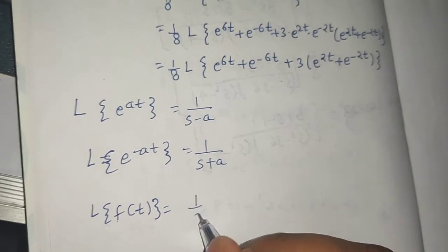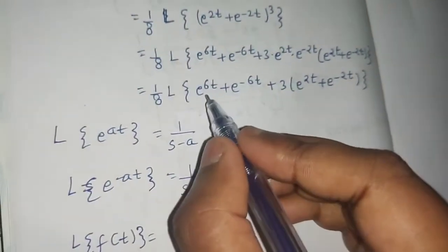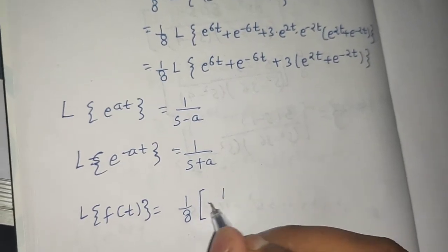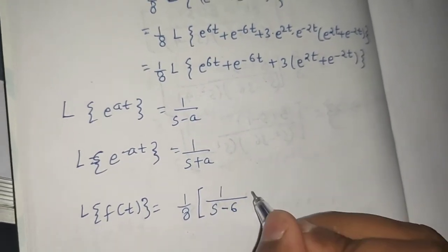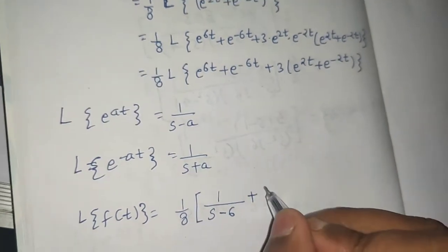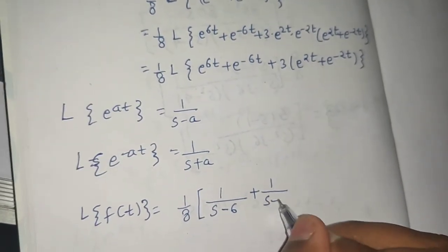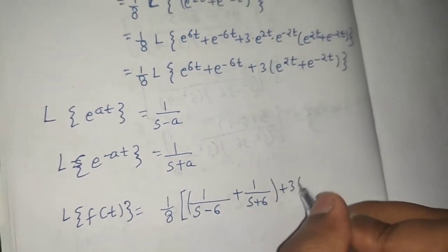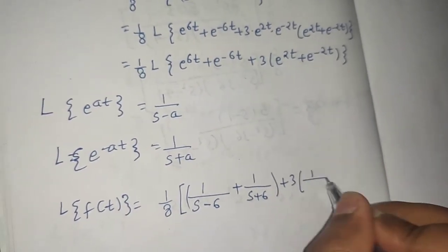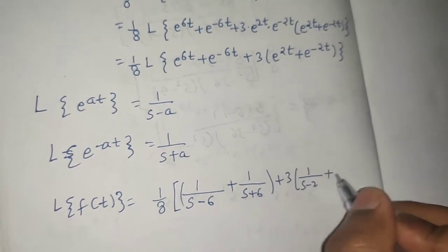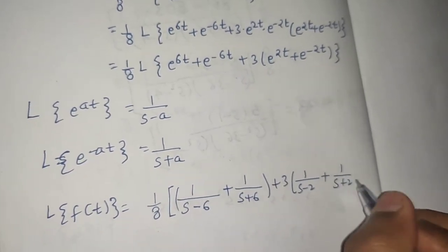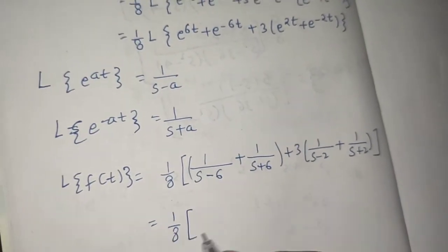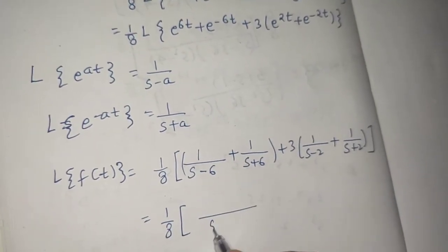Using these formulas, with 1 by 8 outside: the Laplace of e power 6t is 1 upon s minus 6, and the Laplace of e power minus 6t is 1 upon s plus 6. Then 3 times the Laplace of e power 2t gives 1 upon s minus 2, and the Laplace of e power minus 2t gives 1 upon s plus 2.